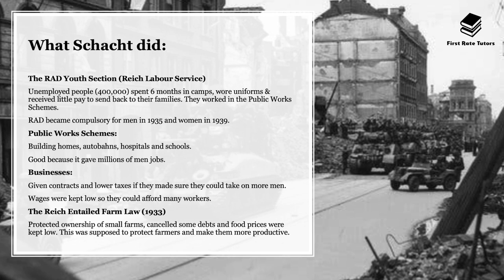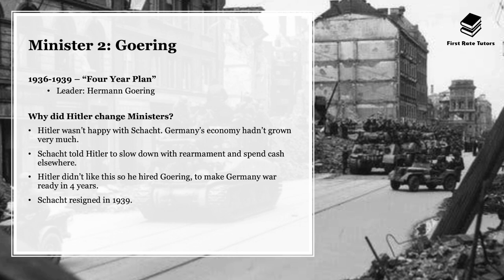Hitler just wanted the numbers to go up in terms of people who were in work. Another aspect of his economic policy under Schacht was the Reich Entailed Farm Law of 1933. What this did is it protected ownership of small farms, cancelled some debts, and kept food prices low. This was supposed to protect farmers and also ensure that they stayed more productive.